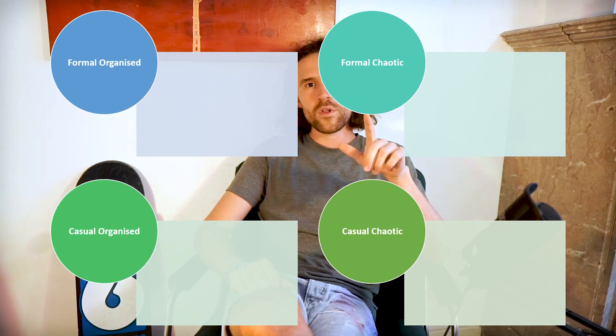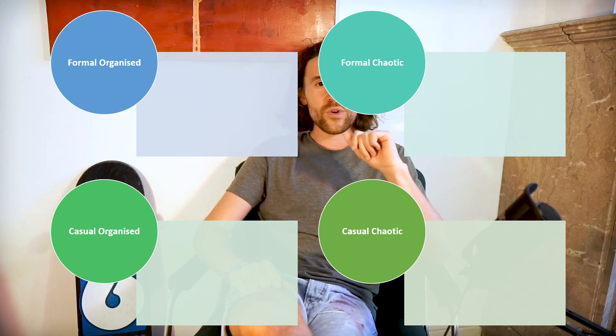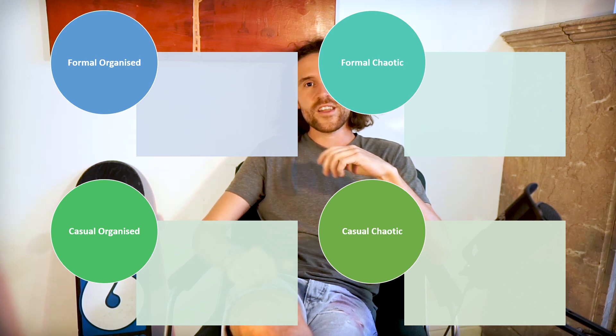Now let's look at the four categories I've specified. We have: formal organized, formal chaotic, casual organized, and casual chaotic. This is not something you'll find elsewhere on the internet — it's just my own classification. These are my personal sources that I want to share with you in those four boxes, not the only sources out there, but the ones I find most useful.